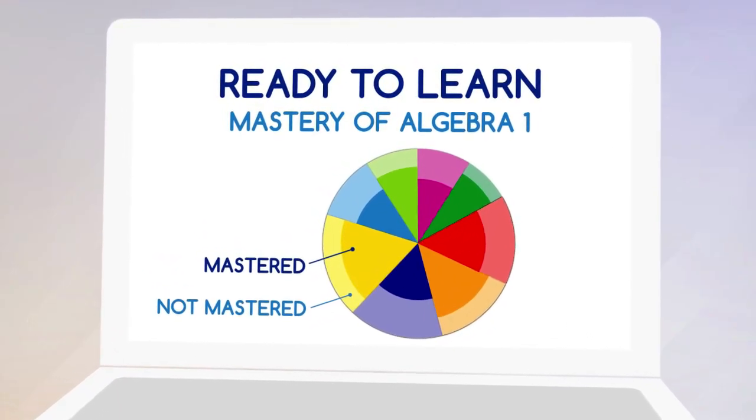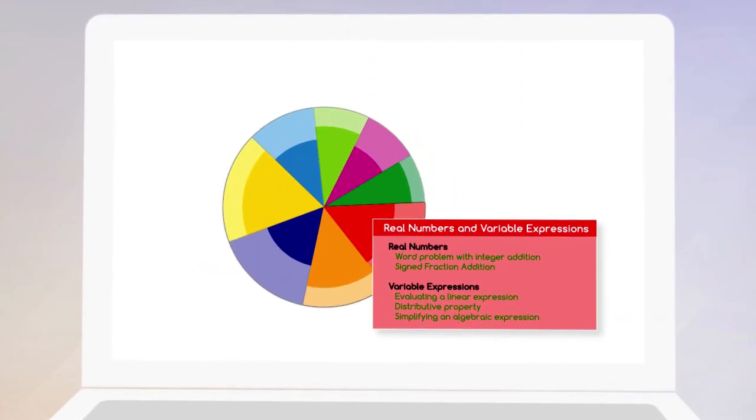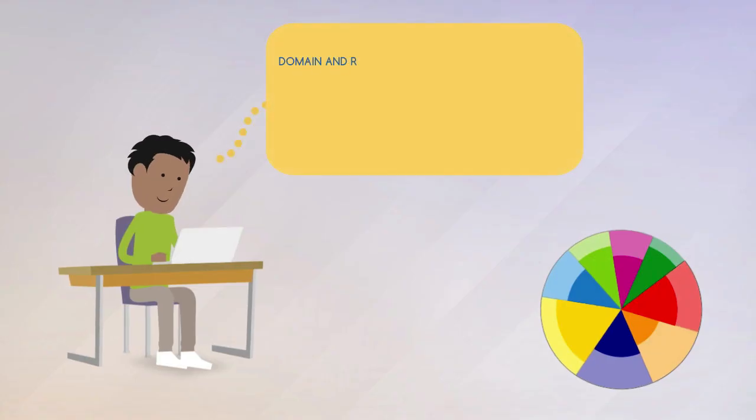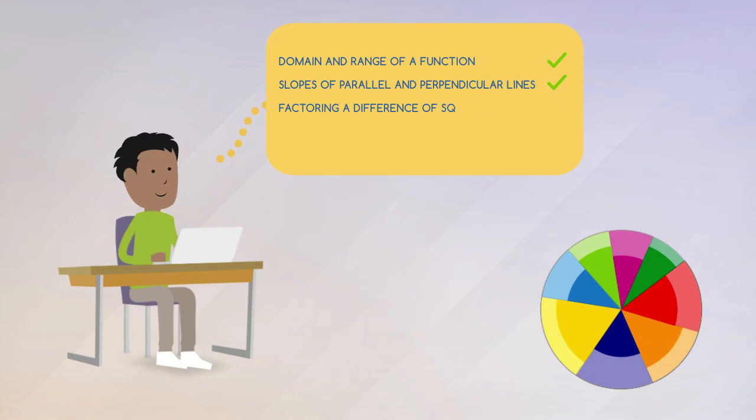The student sees their knowledge state as a multi-colored pie chart, which lets them know what topics are available to explore. Everything happens step-by-step, one topic at a time, as Alex continually updates Sam's knowledge state and ready-to-learn possibilities.